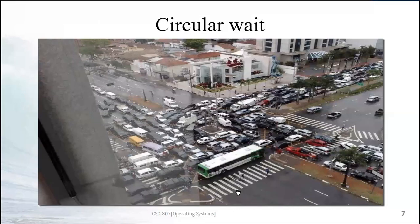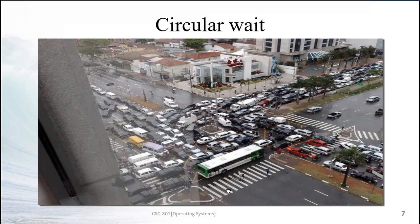One real-world example of circular wait is cars stuck in a traffic jam. All cars are stuck and the traffic jam can only be solved if one car can move in one direction, but no car can move because every car is being held back by another. This is exactly how circular wait works in operating systems.